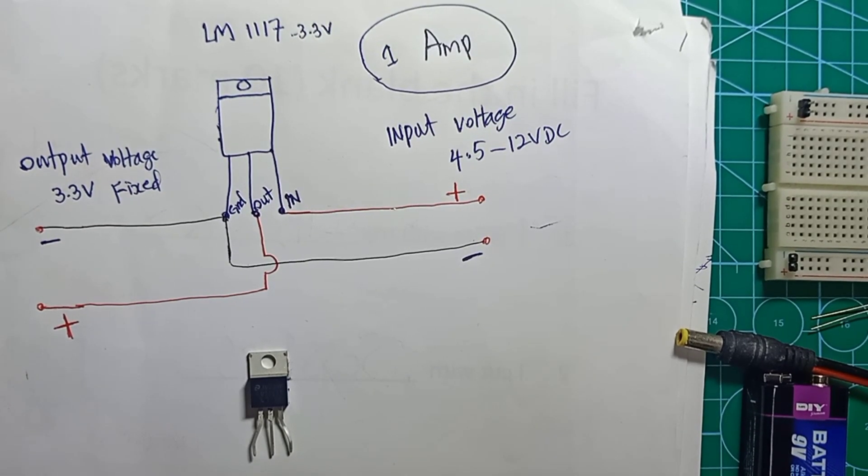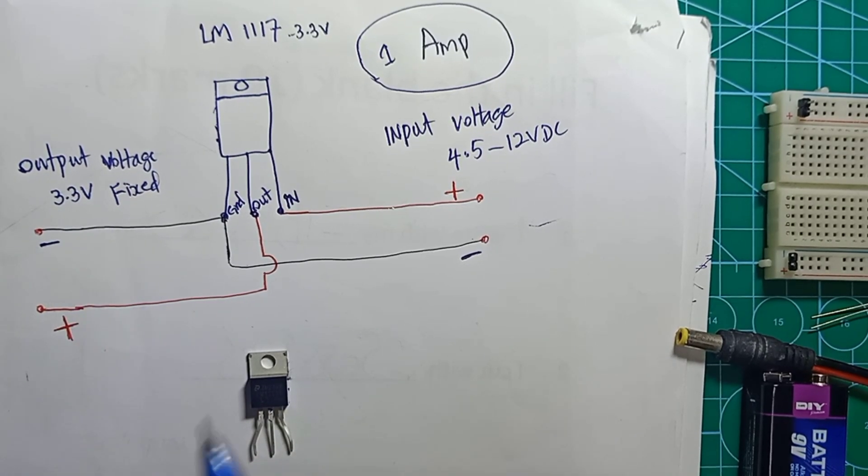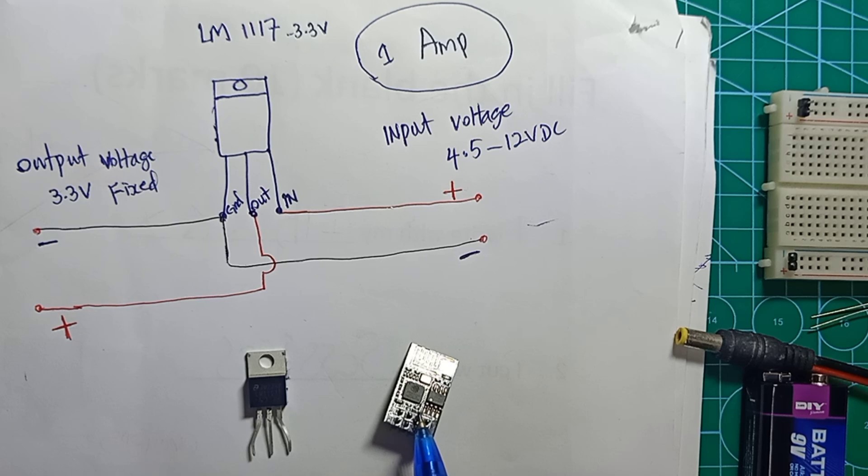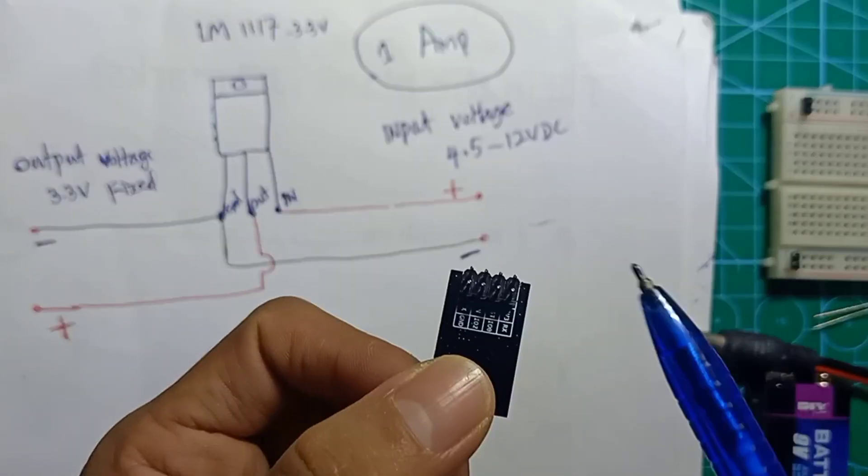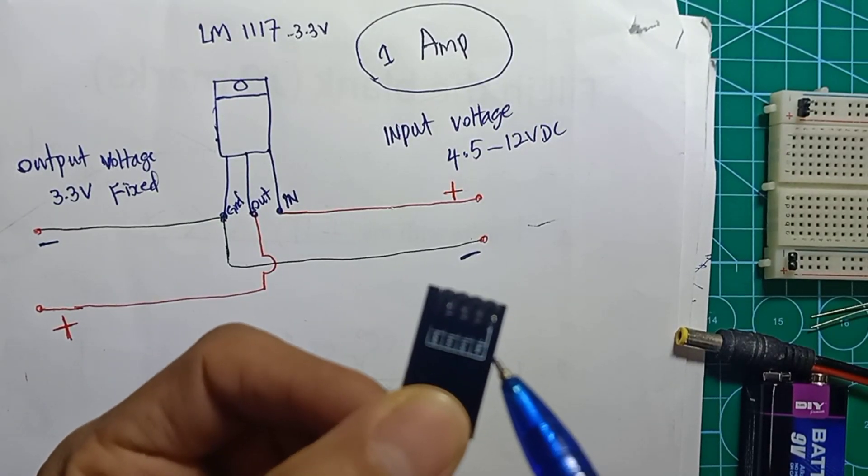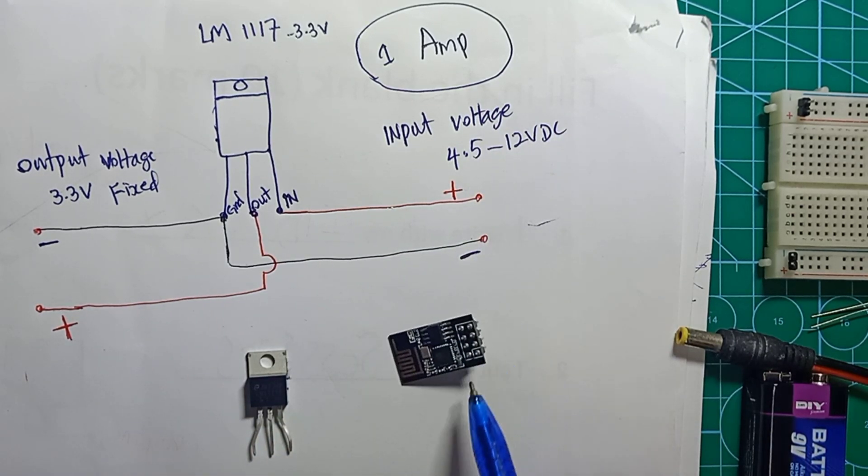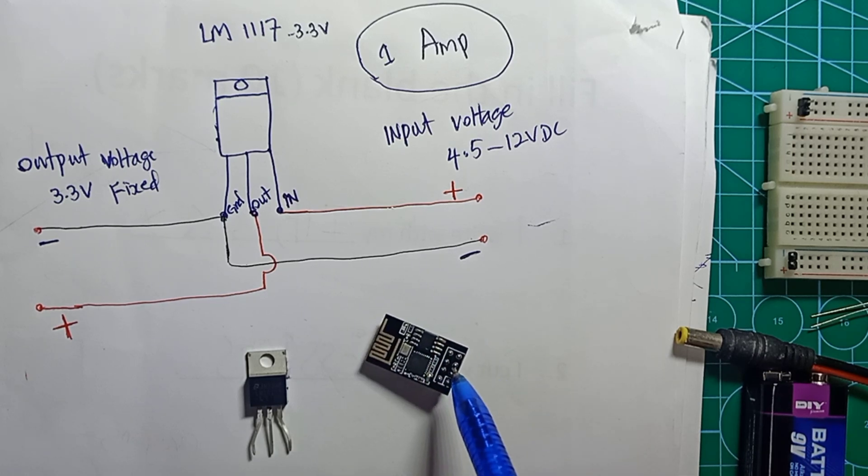Today I would like to share how we can set up a 3.3 volt DC output. Some components, sensors, and modules require 3.3 volts, especially for example this ESP8266-01 WiFi module, which only works on 3.3 volts. If you supply 5 volts to this module directly from Arduino, the module will be burnt out.